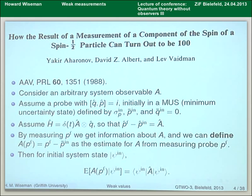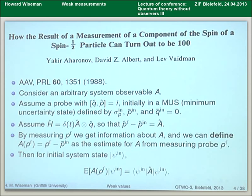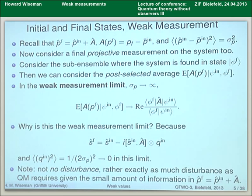By measuring the final momentum of the probe particle, we get information about the system variable A. We can define an estimate for the system variable A as simply this thing where we've actually measured the final momentum, and we have to replace the initial mean momentum. That's obviously the best way we can do that. And if we have the system prepared in some initial state psi-in and look at the expected value of this estimate from the probe, we see that it comes out equal to the expectation value of that observable for the system.